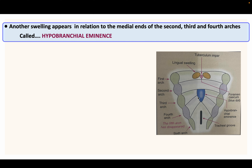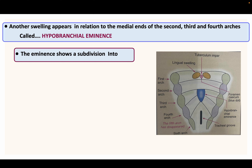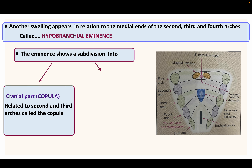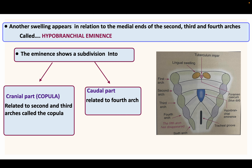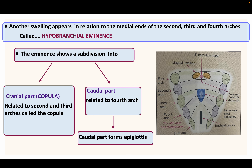Another swelling appears in relation to the medial end of the second, third, and fourth arches, called the hypobranchial eminence. This eminence shows a subdivision into a cranial part related to the second and third arches, called the copula, and a caudal part related to the fourth arch, which forms the epiglottis.